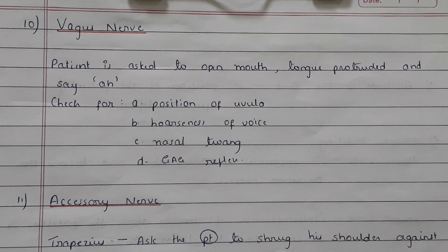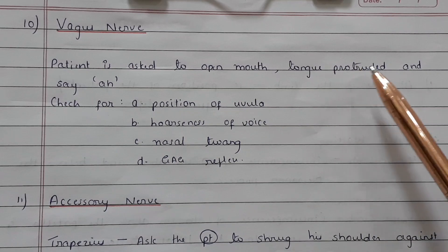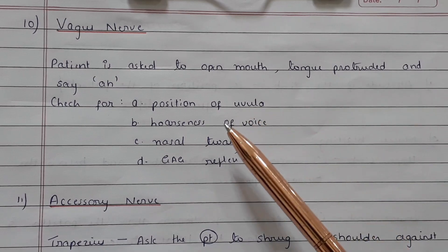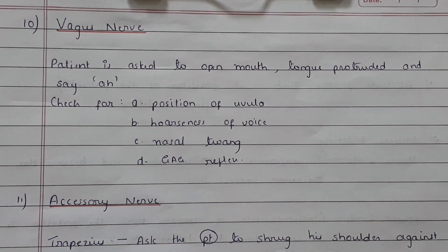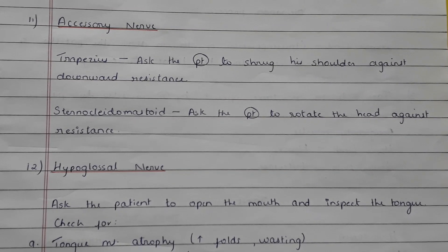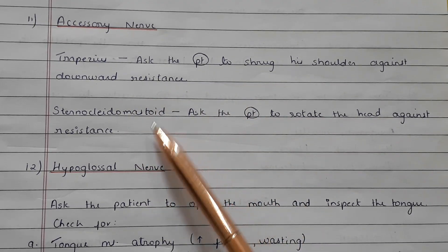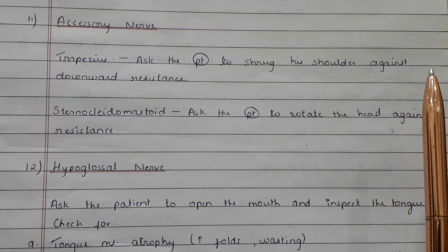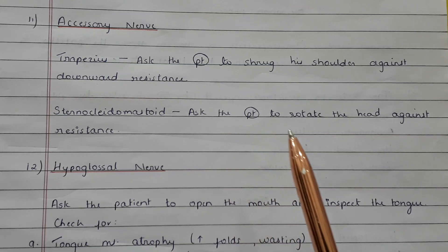The tenth cranial nerve is the vagus nerve. The patient is asked to open the mouth with the tongue protruded and say 'A'. Check for position of the uvula, hoarseness of voice, nasal twang, and gag reflex. The eleventh cranial nerve is the accessory nerve — we test the trapezius by asking the patient to shrug the shoulders against downward resistance, and the sternocleidomastoid by asking the patient to rotate the head against resistance.